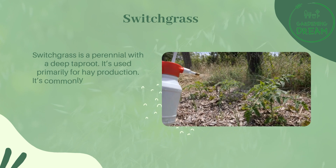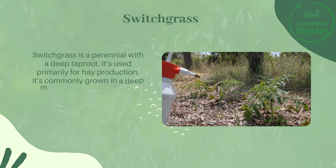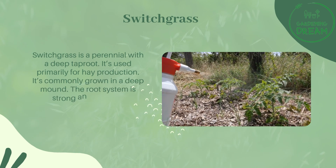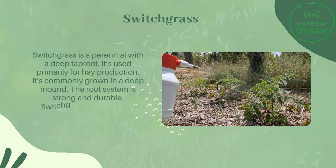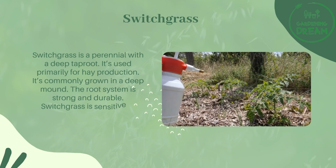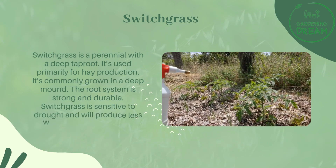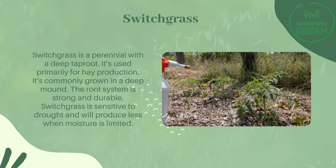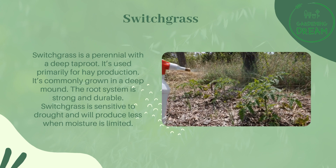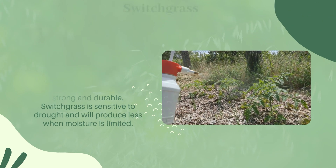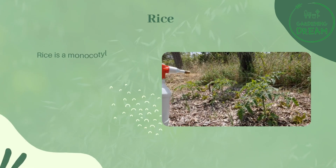Switchgrass is used primarily for hay production and is commonly grown in a deep mound. The root system is strong and durable, though switchgrass is sensitive to drought and will produce less when moisture is limited.